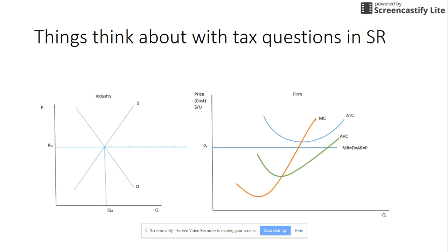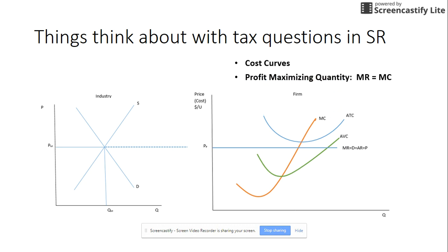Here we have a perfectly competitive firm in the short run — you can see the ATC curve is above MR. Some key things to think about when answering tax questions: are they asking short run or long run? We're going to focus on the short run first. You need to think about what happens to the cost curves — the AFC, the AVC, the ATC, and the marginal cost curve. You also need to think about whether the marginal cost curve is affected, since that determines the profit-maximizing quantity using MR equals MC. On this graph MR equals MC where the two curves intersect, giving a quantity at QF.